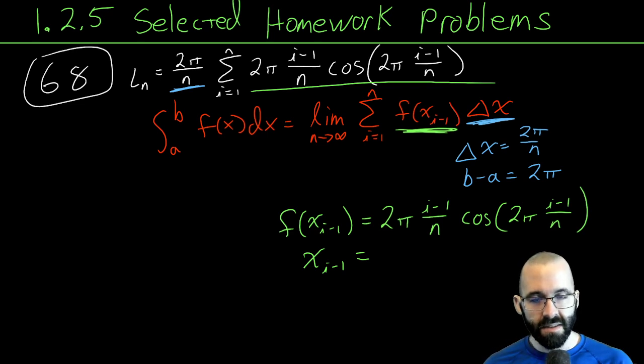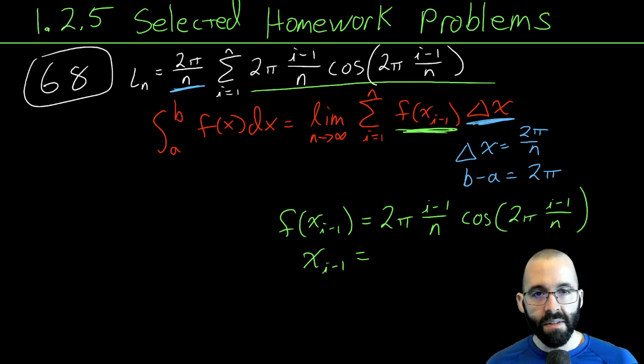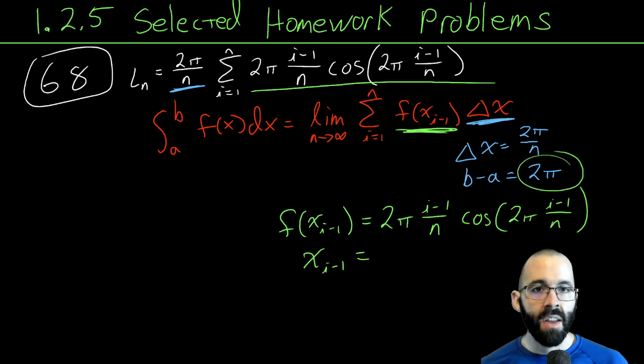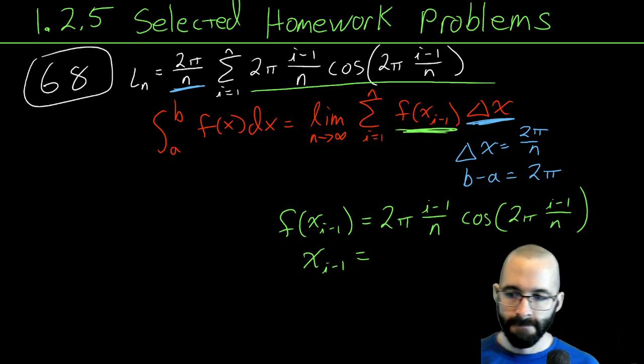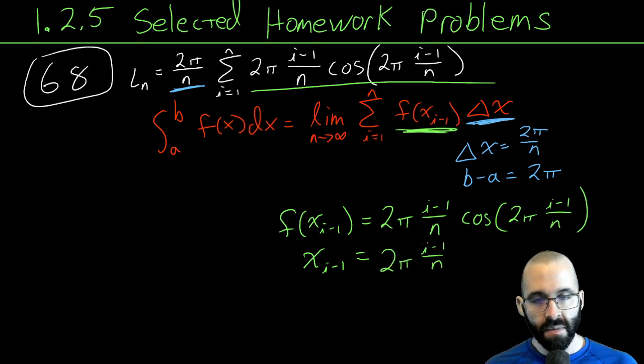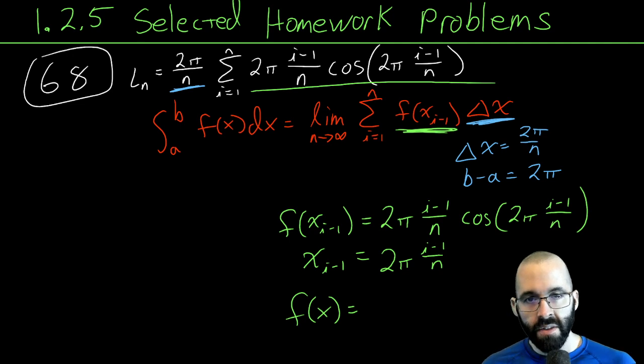You could guess this or you could guess this. Those are both good options because they both pop up twice. Only one of them is correct. The width of the interval tells us which one is correct - it has to be 2π. So I'm going to guess it's going to be the whole thing: 2π(i-1)/n.